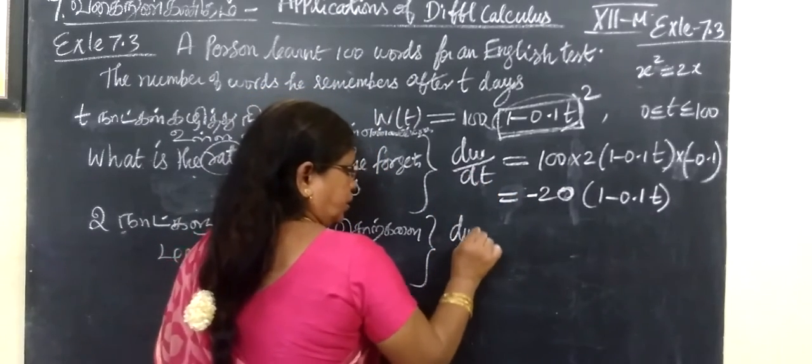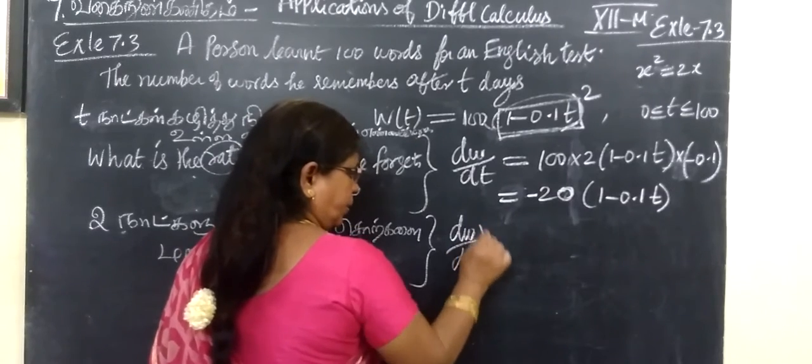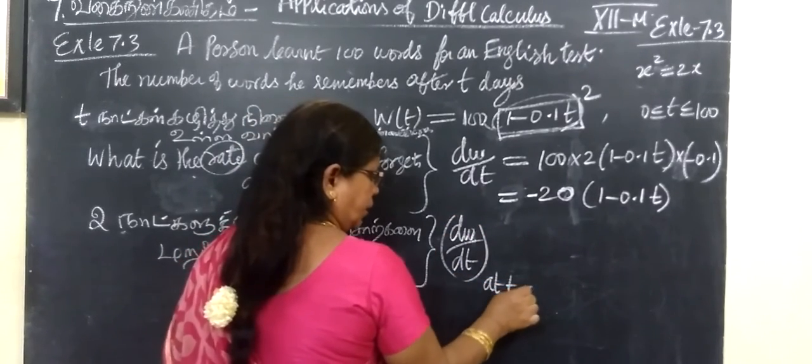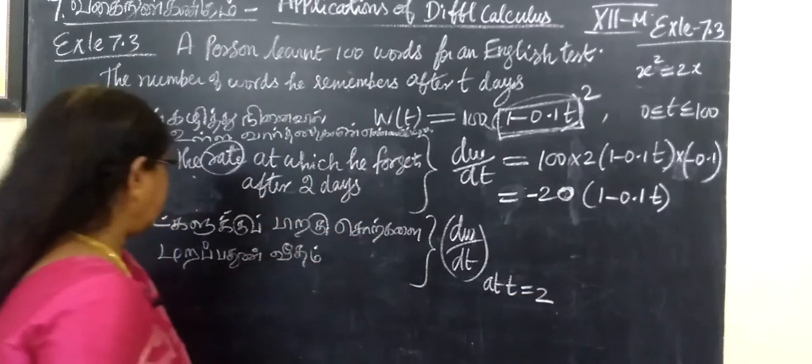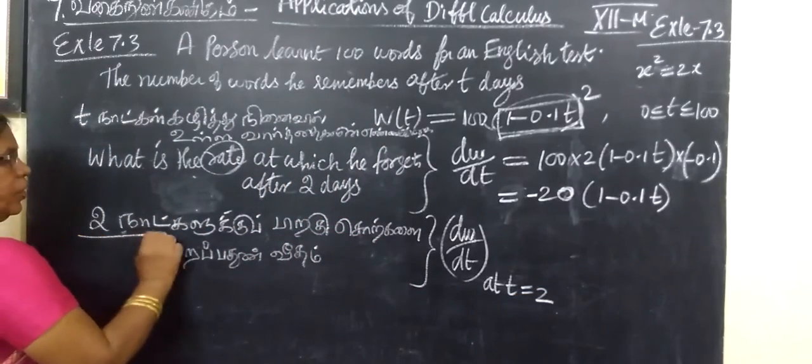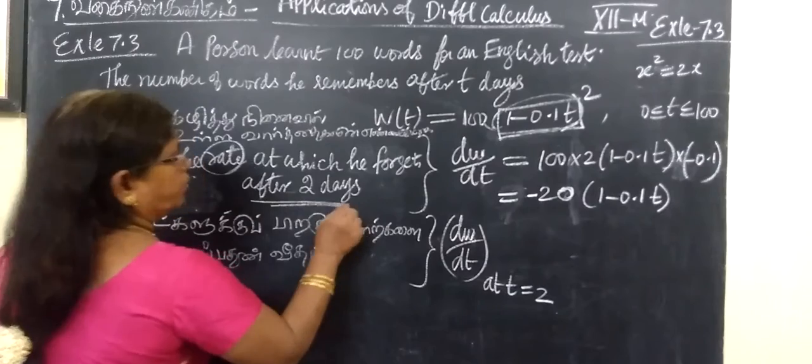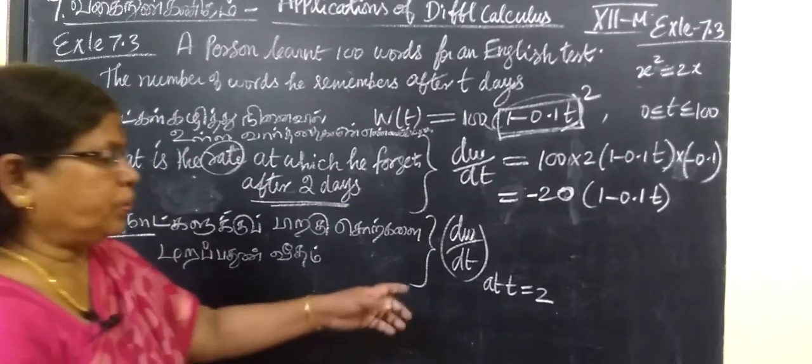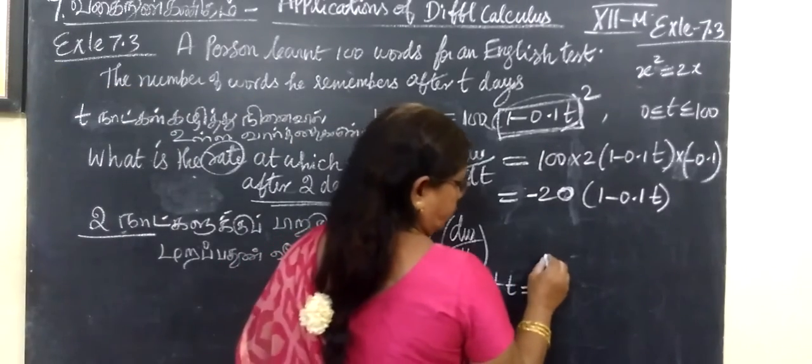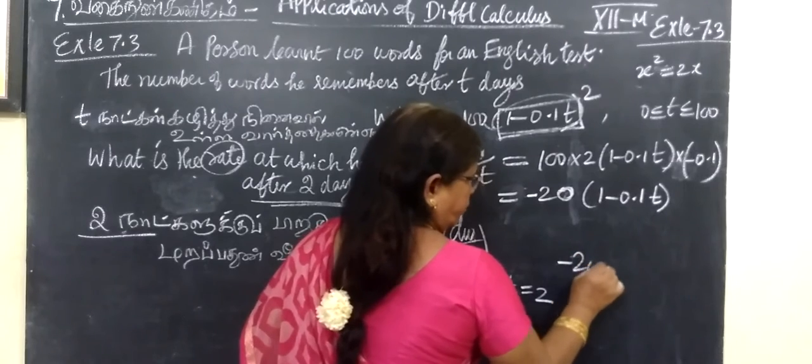The question is dw by dt at t equal to 2. Since it is given after 2 days, after 2 days, we substitute 2. So minus 20.